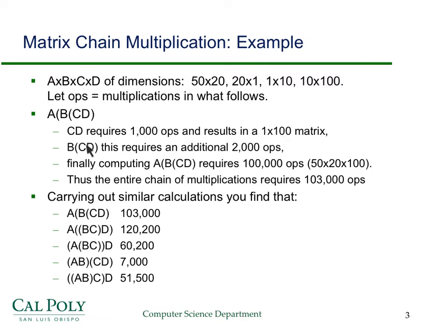Then when we multiply this by B, that means I'm going to have this 20 by 1 matrix multiplied by a 1 by 100 matrix, and that's going to be another 2,000 operations. So far we've got 3,000 operations already. And now finally we have to multiply A times this whole result. That's going to be 50 by 20 by 100, which turns out to be 100,000 operations. So 100,000 plus 2,000 plus 1,000 gives you 103,000 operations.